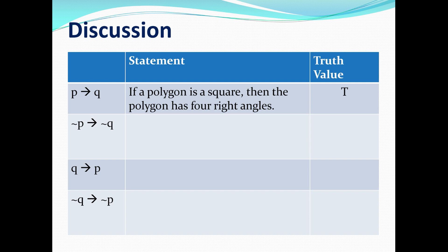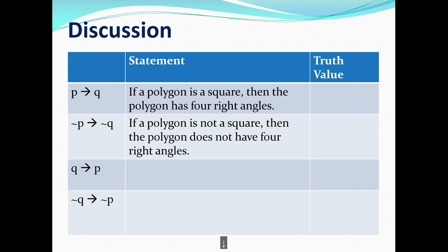For the second statement, you negate P and Q, giving if not P then not Q: if a polygon is not a square, then the polygon does not have four right angles. Is that always true? If a polygon is not a square, let's say it's a rhombus — then it doesn't have four right angles, so that's true. But the polygon could also be a rectangle, and in that case the polygon does have four right angles. So the statement is true or false depending on the situation — we can say it's uncertain.